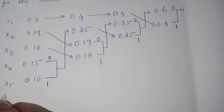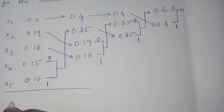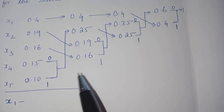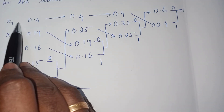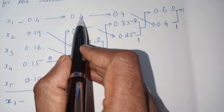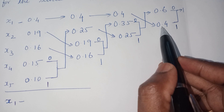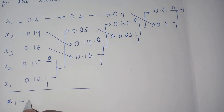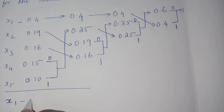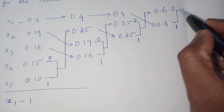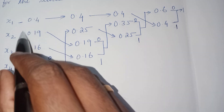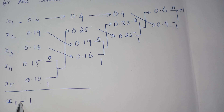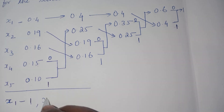Let's find the code word for x1. Track x1 with probability 0.4 through the tree. Following the arrow marks, the branch weight is 1. This is the last branch, so the code for x1 is simply 1.